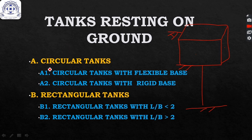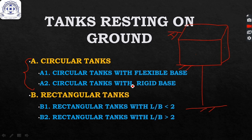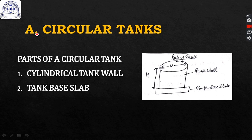Tanks resting on ground can be of two types: circular tanks and rectangular tanks. Circular tanks can be with flexible base or with rigid (fixed) base. In this presentation, we will be studying circular tanks with flexible base and circular tanks with rigid base resting on ground.